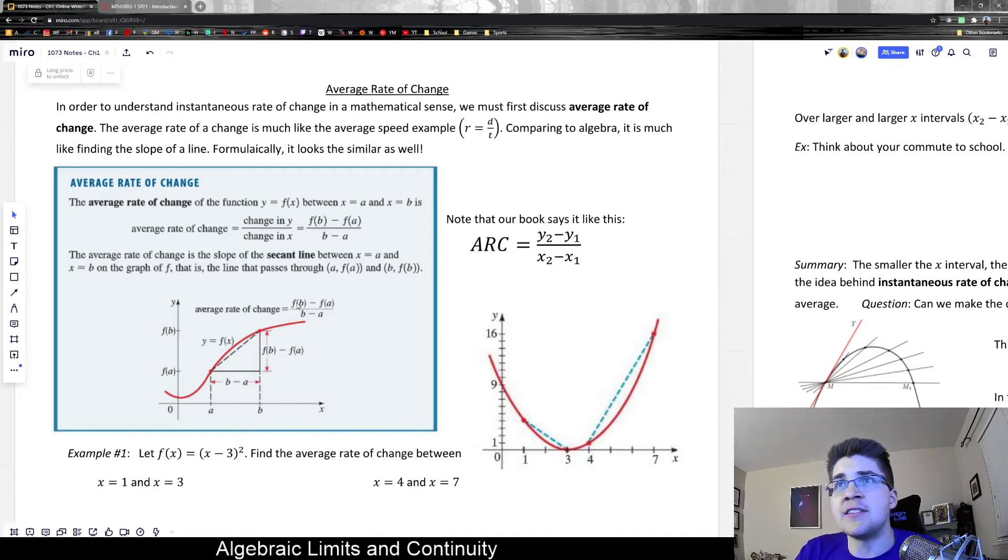Basically, this f(b) is just the y value at the second point, and f(a) is the y value at the first point. So they're using a and b to stand for x1, x2, and they're using f(b) and f(a) to stand for y1 and y2.